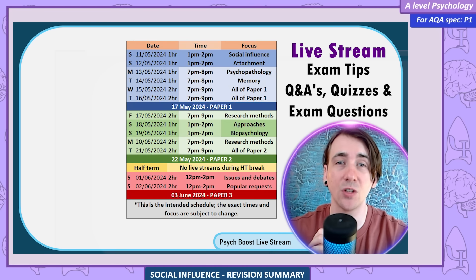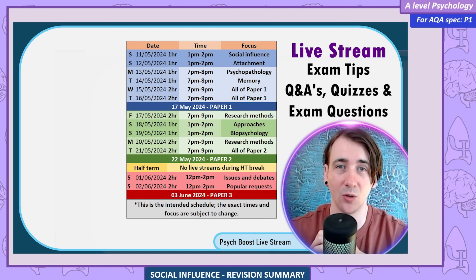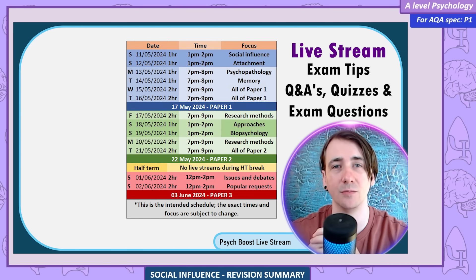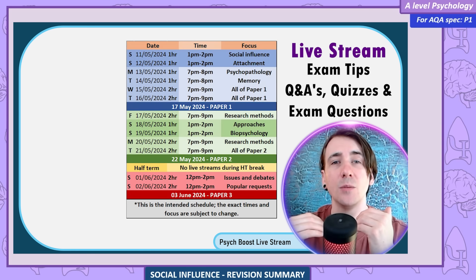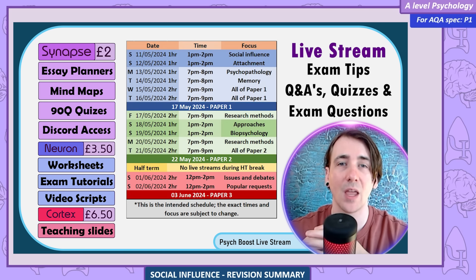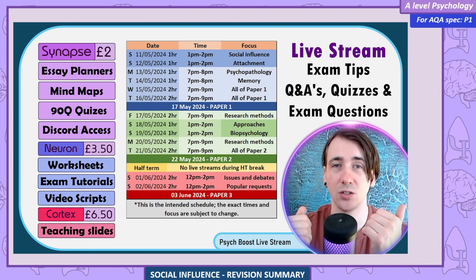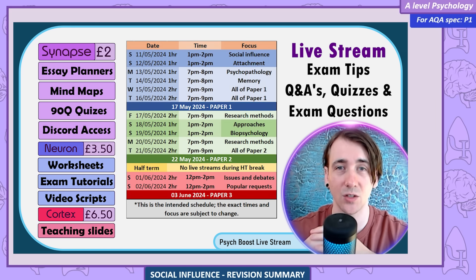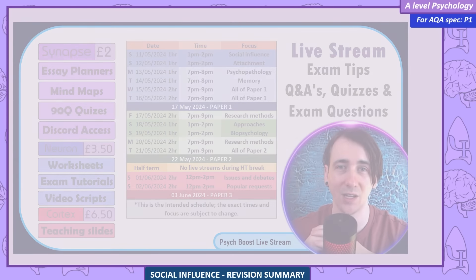Starting today, my Patreon live streams will be every day until Paper 2, and I'll even run a few before Paper 3. I'm planning to do 20 hours altogether. These live streams are available to everyone at sign-ups level and up. If you're interested in joining me for these revision sessions, grab a pen and paper and download all the 2022 AS and A-level past papers from AQA's website.